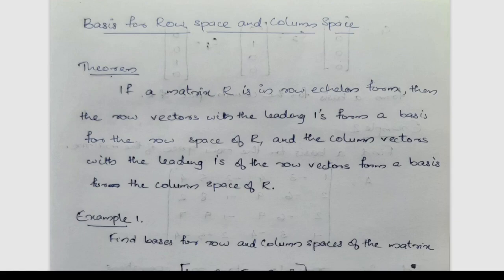This is the basis for row space and column space. If we know the definition of row space and column space, the basis for row space and column space is found in row echelon form. The row vectors with the leading ones form a basis for the row space of R, and the column vectors with the leading ones of the row vectors form a basis for the column space of R.